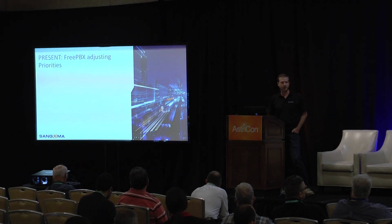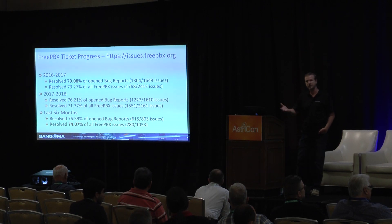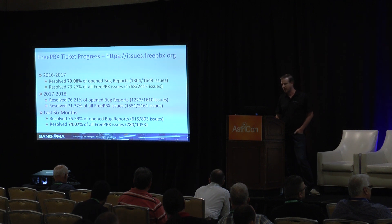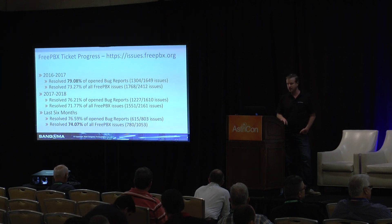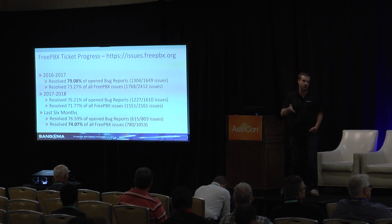If you report an issue to the issue tracker, how many of those issues are actually triaged and fixed? From 2016 to 2017, 79.08% of all open bug reports were fixed within the year — opened and fixed within that same year. That's dropped a little bit to 76%, but in the last six months we've kept it at 76%. We want to increase this to about 80-85%. From 2016 to 2017 we resolved 73% of all FreePBX issues, and in the last six months we actually fixed 74%, which is an increase.